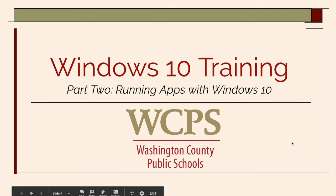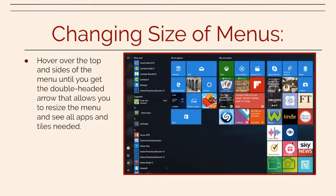In this video, you will learn about running apps with Windows. You can change the size of the menus by hovering over the top and sides of the menu. You'll get a double-sided arrow and you'll be able to change the position and the size of that menu.